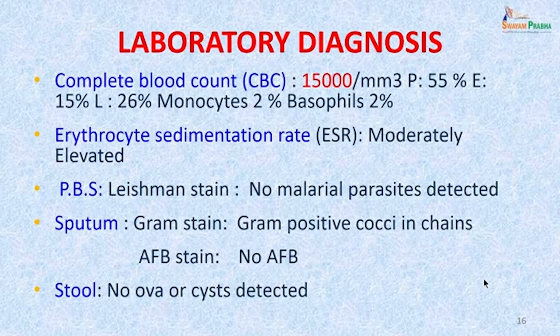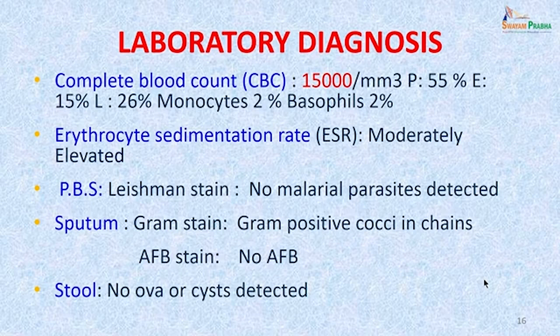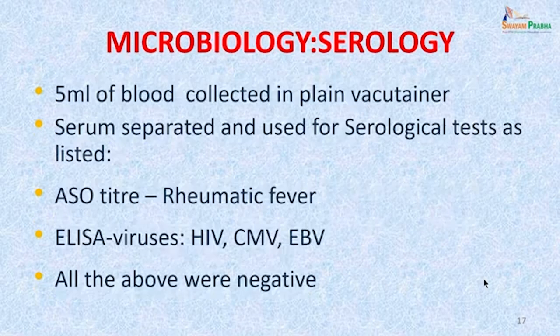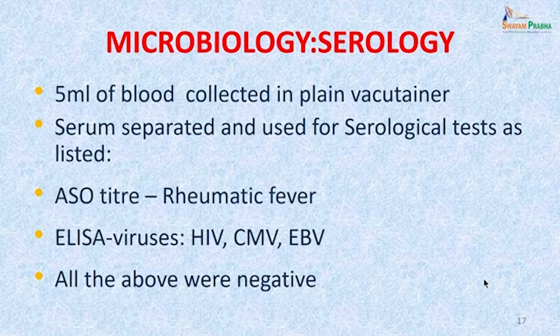Laboratory investigations: in the hemogram polymorphs were not raised but leukocytosis was observed, ESR was moderately elevated, peripheral blood smear showed no malarial parasites. Gram-positive cocci in chains were seen in the sputum; acid-fast stain showed no AFB in sputum; stool examination showed no ova or cysts. Then serological examination was started: 5 ml of blood was collected in a plain vacutainer, serum was separated and used for various serological tests.